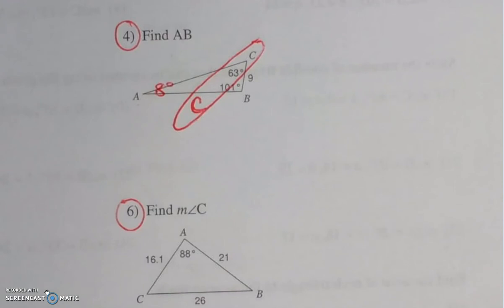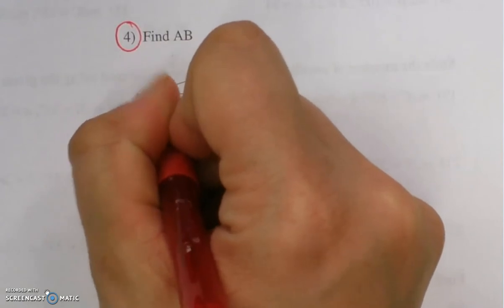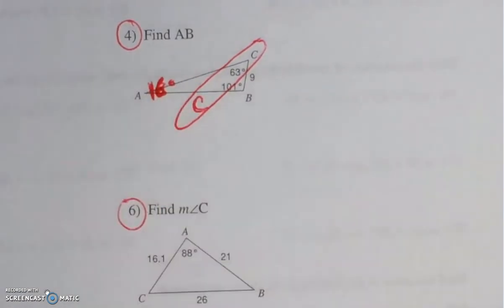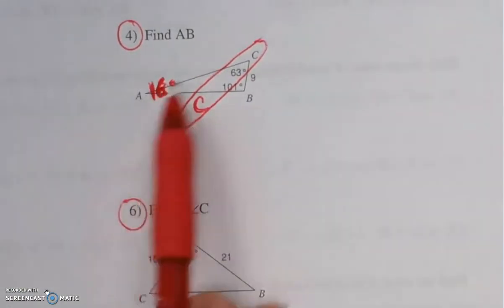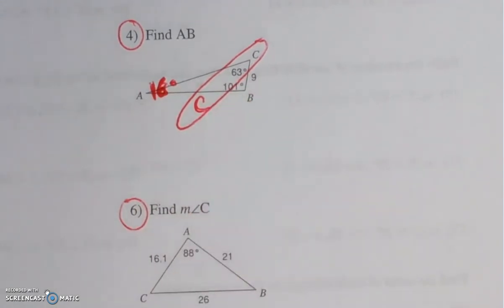180 minus 101 minus 63. We're going to have 16 degrees. Wow. How did we screw that up? I have no idea. Alright, so 16 degrees. Now, are we in agreement that those add up to 180? Yeah. 16 plus 63, 79 plus 1 is 80, right? So we're good.